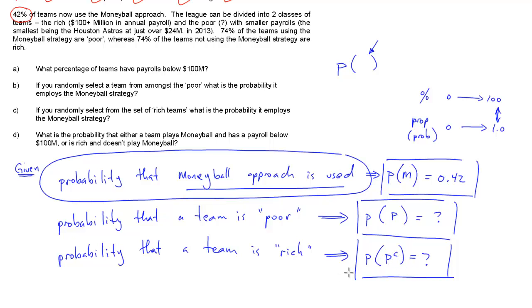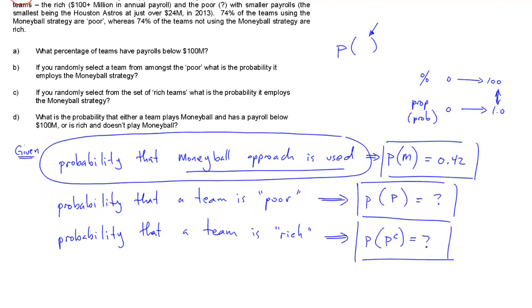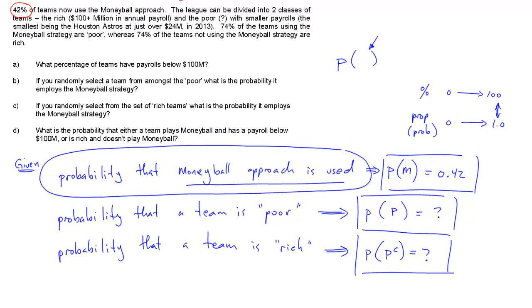This allows me to write out some of the information that was actually given. It says 74% of the teams using the Moneyball strategy are poor.